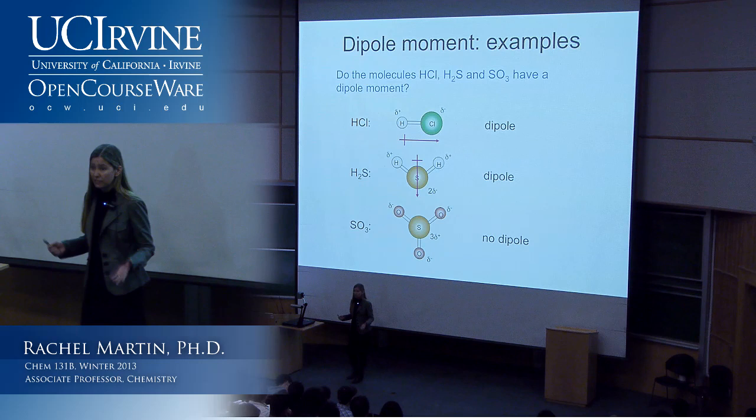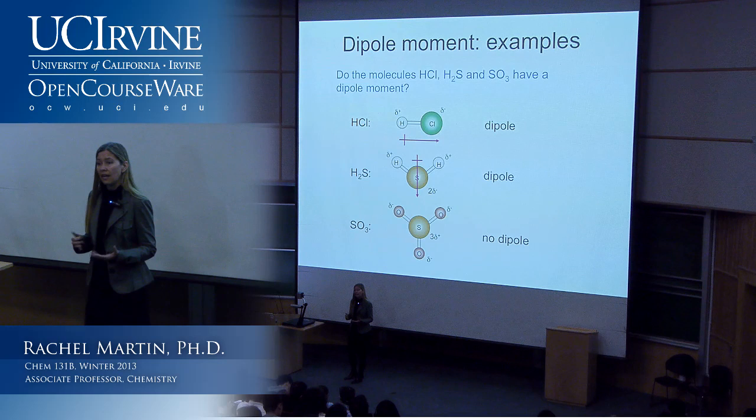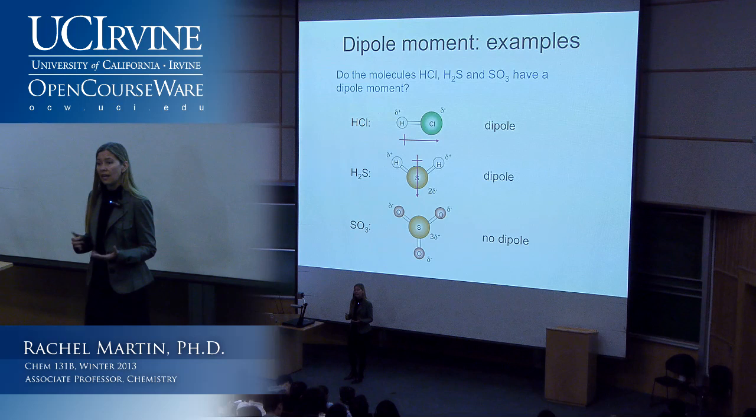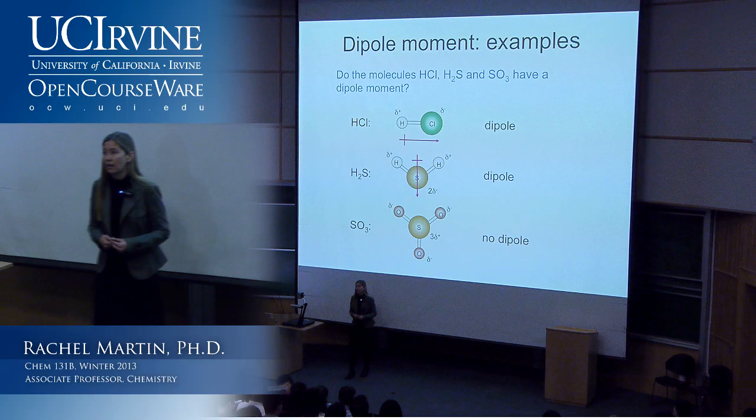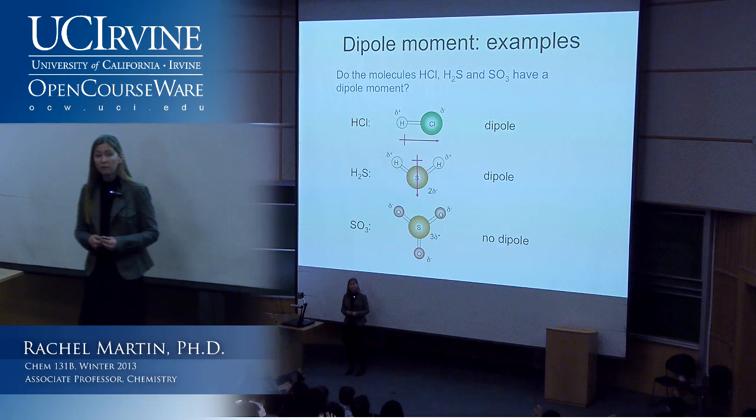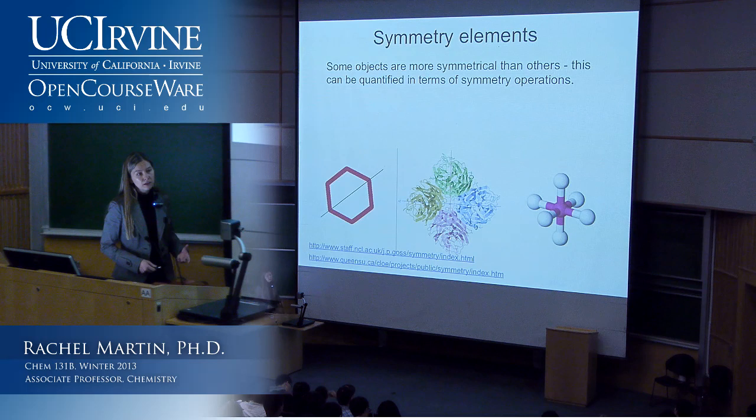We're going to start with the mathematical descriptions of symmetry we'll use in this course, and then build up to how we can use that to determine hybridization of orbitals and which orbitals have the right symmetry to be involved in particular bonds. If you're taking inorganic chemistry, this will overlap very well with that. The idea here is that some objects have more symmetry than others—we know this intuitively, but there are ways to quantify it.